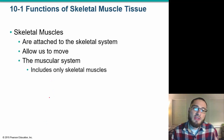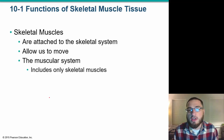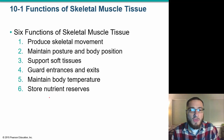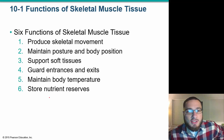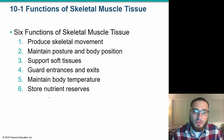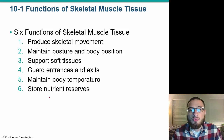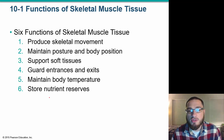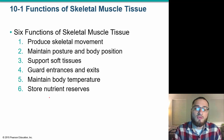Skeletal muscle tissue is for our movement. It attaches to the skeletal system, allows us to move, and includes only skeletal muscles when we talk about the muscular system. There are six functions of skeletal muscle tissue: to produce skeletal movement, maintain posture or body position, support soft tissues, guard entrances and exits, maintain body temperature, and store nutrient reserves.